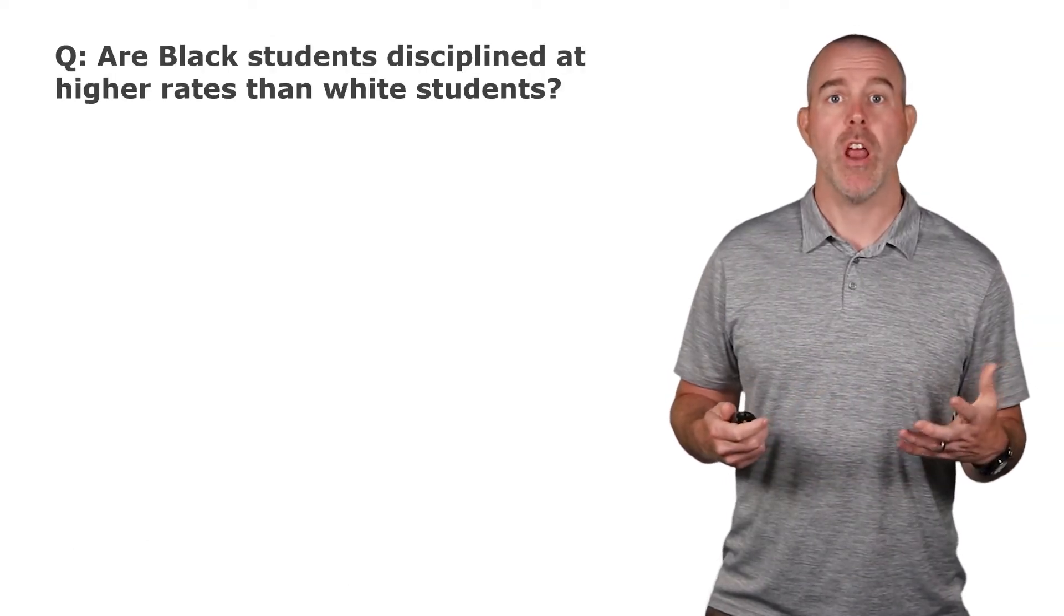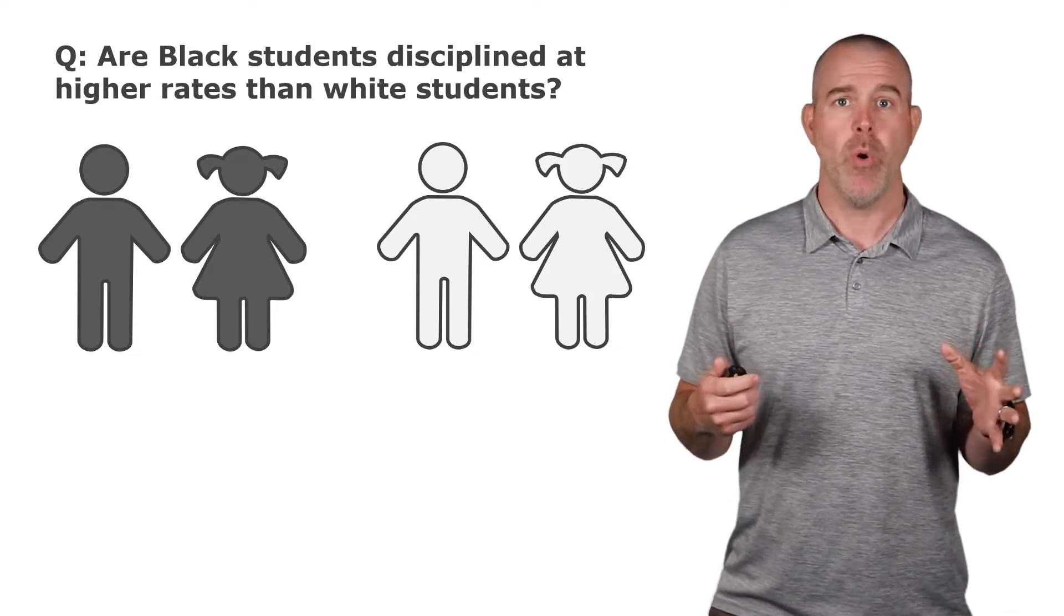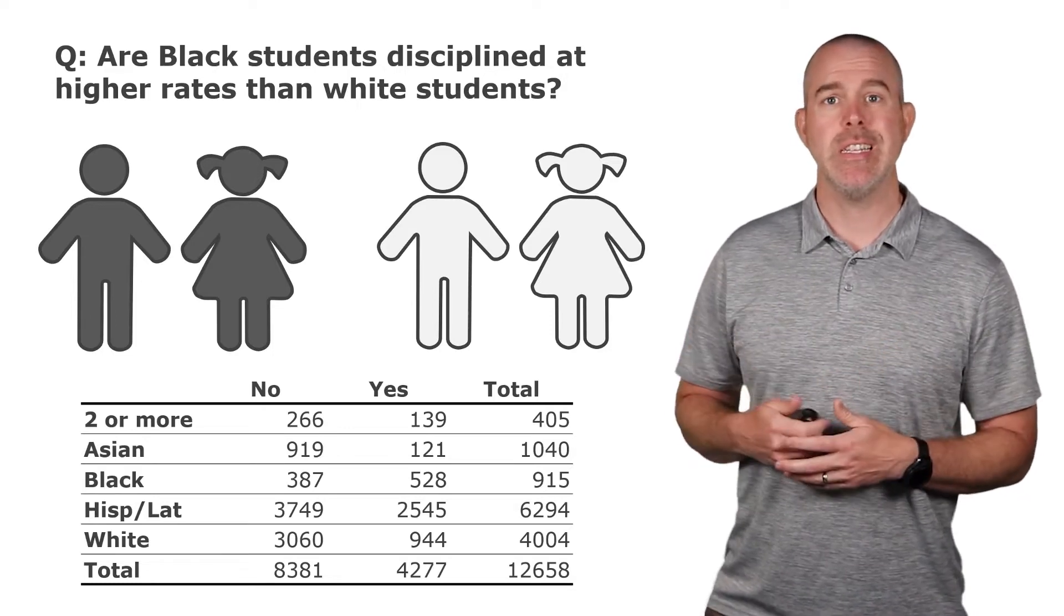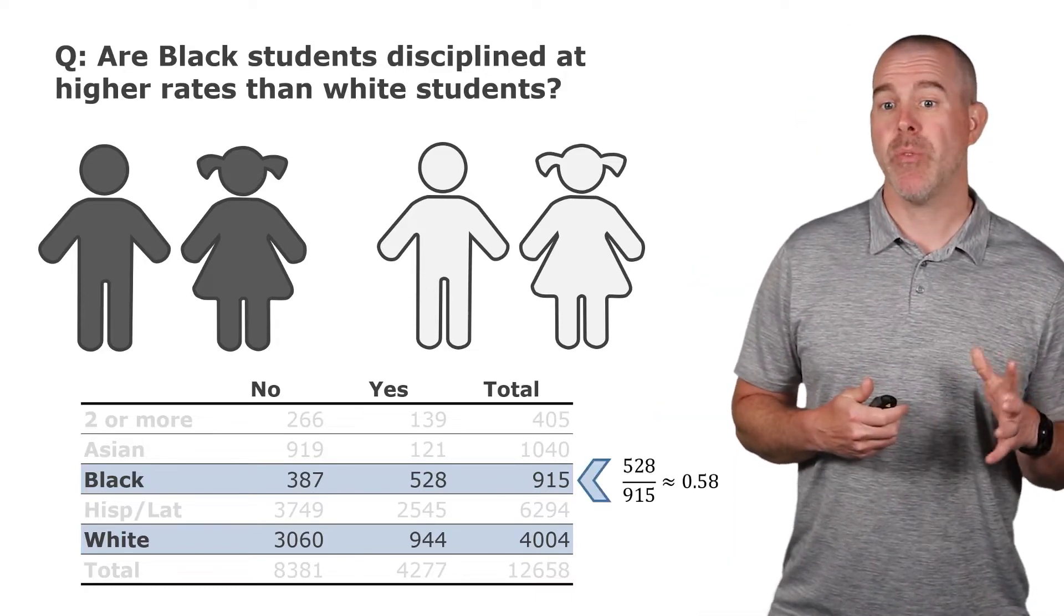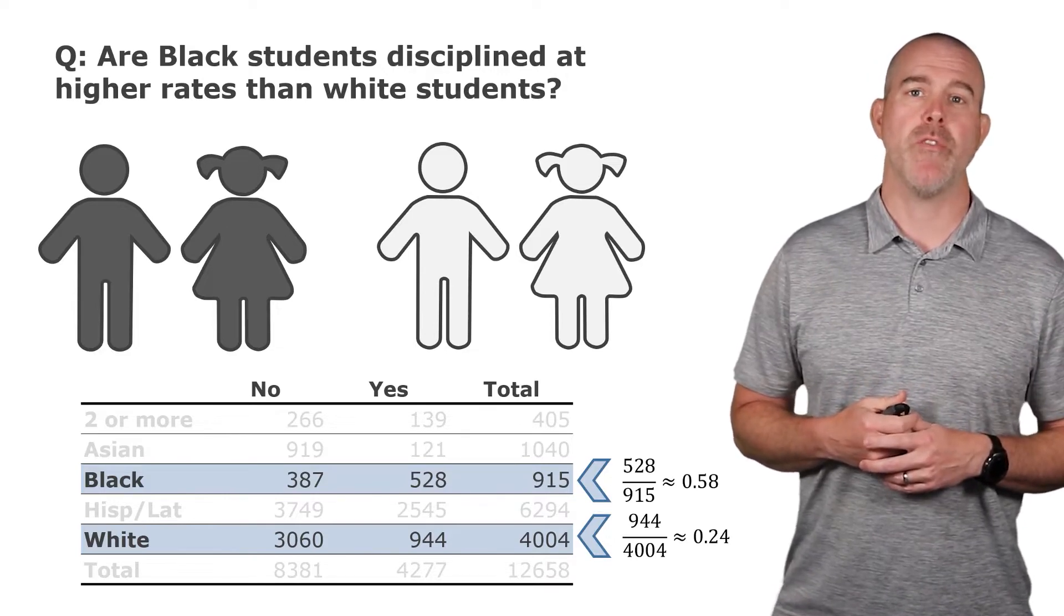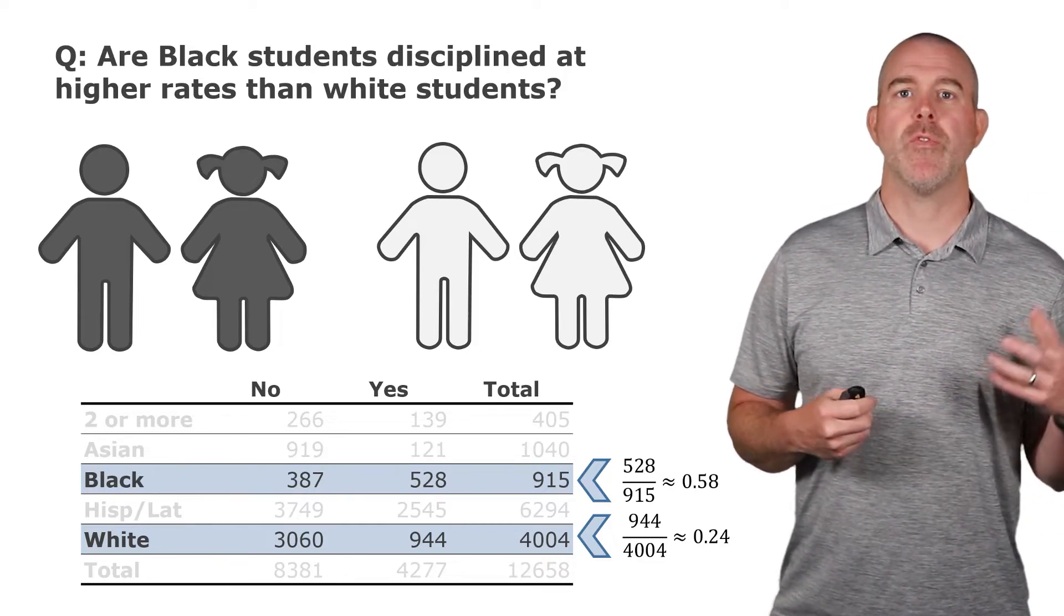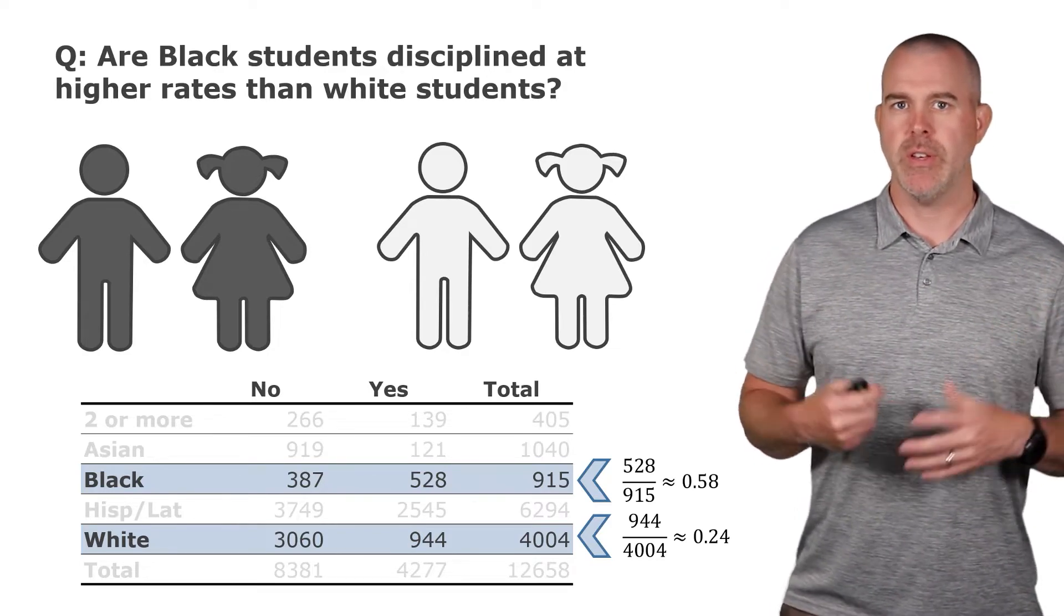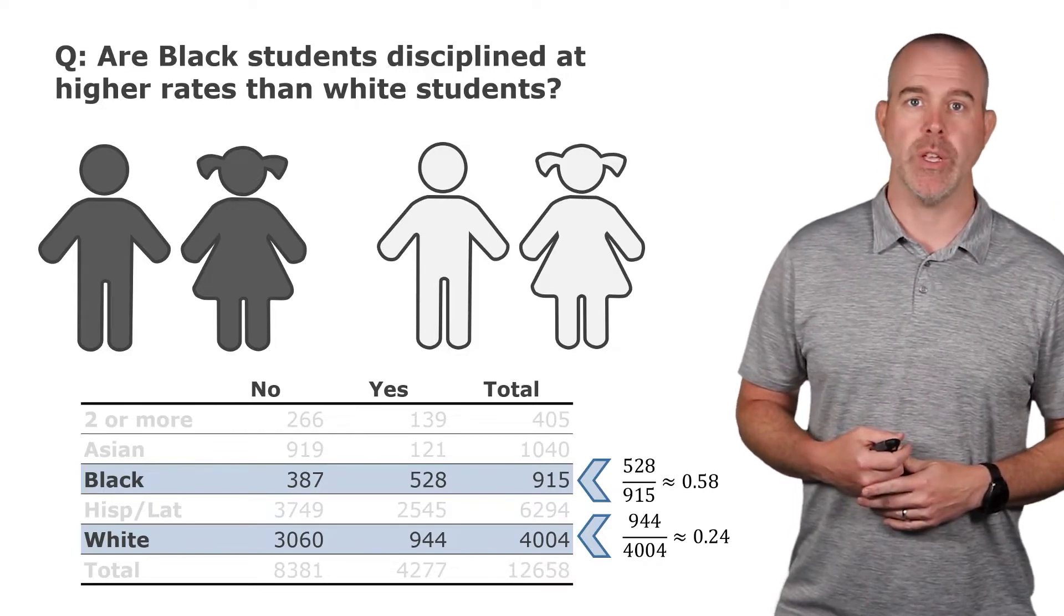So let's try to answer this question. Are black students disciplined at higher rates than white students? We've investigated this before, but now we can be a little more formal. We have these counts from the data. This is a contingency table. We're going to focus just on the black and the white students here. Black students have a discipline rate of about 58% from this database, and then white students have a discipline rate about 24%. If you don't have this database bookmarked, I'll put the link in the description. This is from a large suburban Midwestern school district, we have discipline data, we have race or ethnicity data, the discipline here is whether or not you received at least one discipline referral within that school year.